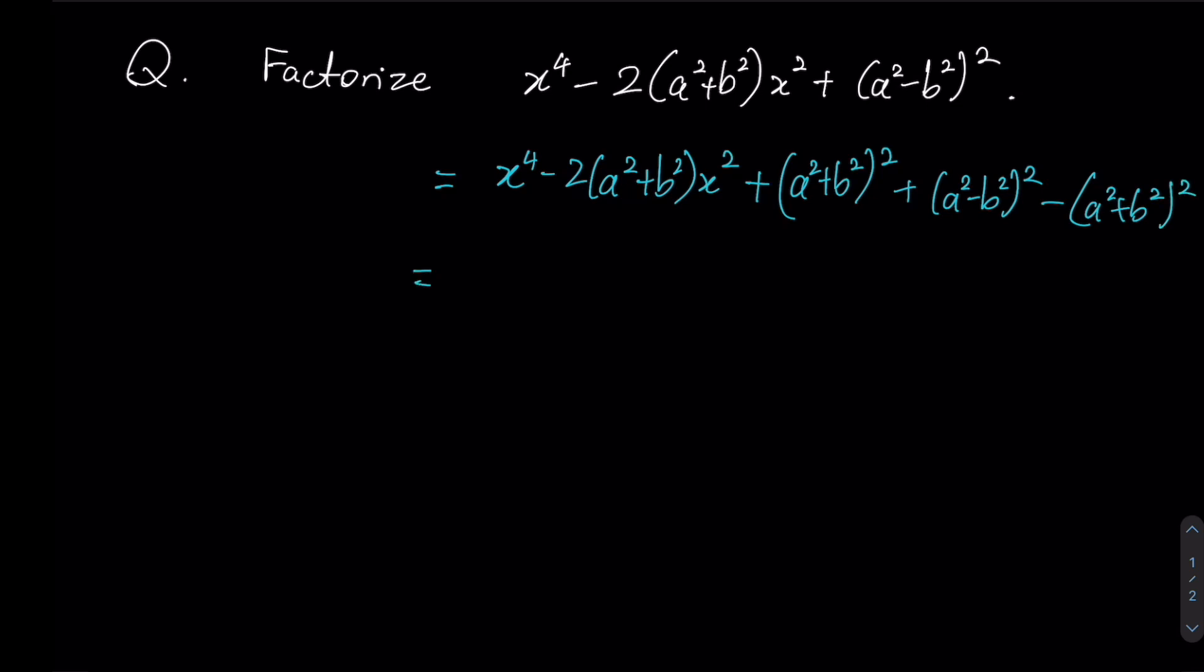So now that we have completed the square, these first three terms can now be written as x² minus (a²+b²) whole thing squared. So that's the three terms that are being factorized.